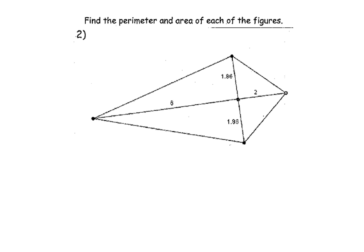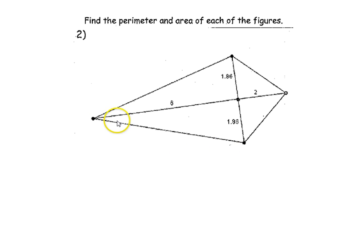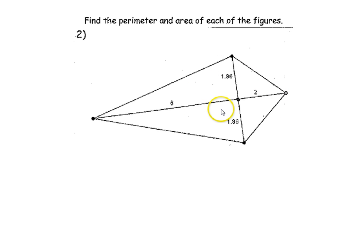Number 2 is another figure — this is a kite. It doesn't have notation marks to confirm what's congruent and what's not, but you can safely assume it's a kite. If you're not sure, it would be a great clarifying question to ask, and the answer is yes. Since it's a kite, we know some things about the figure. We're going to find the perimeter and area, and I'm going to break this kite down into four right triangles.